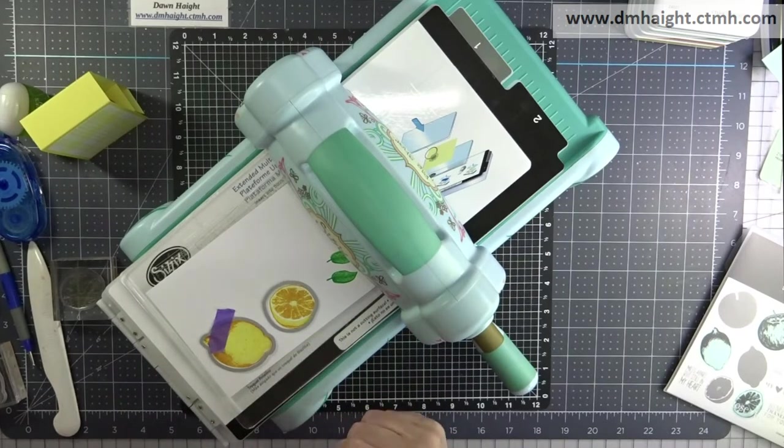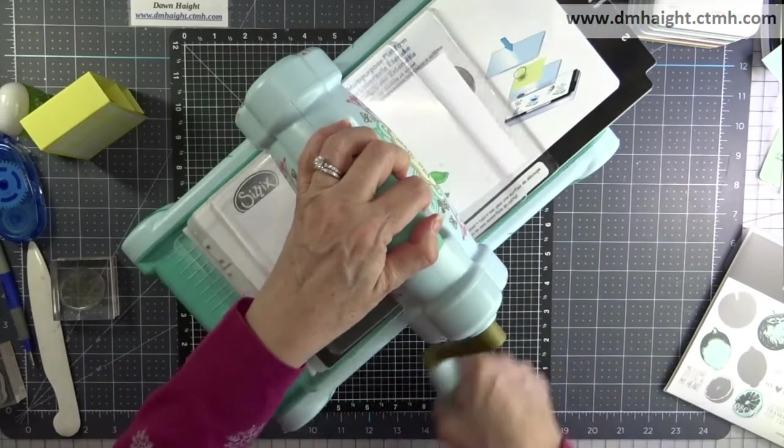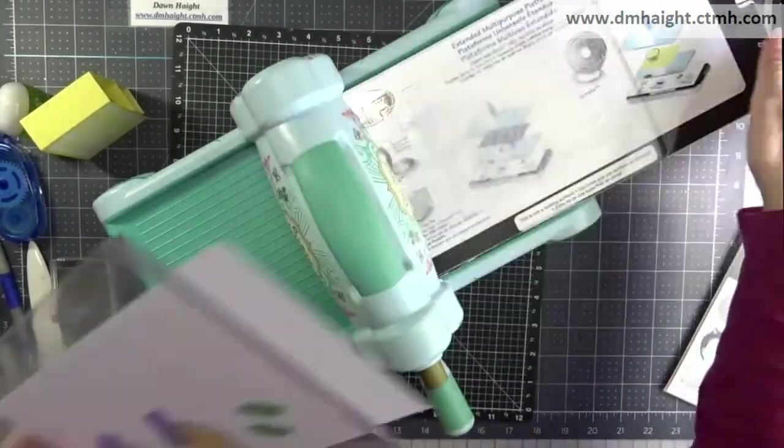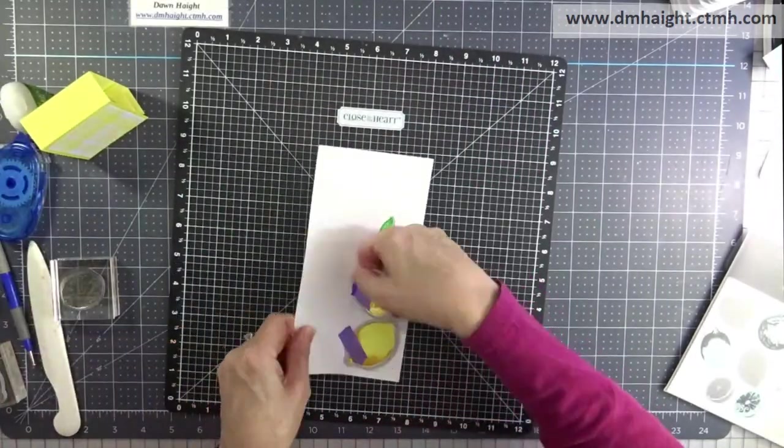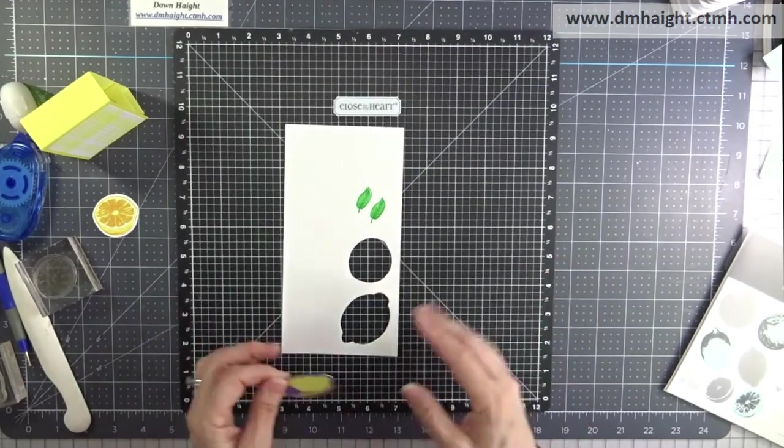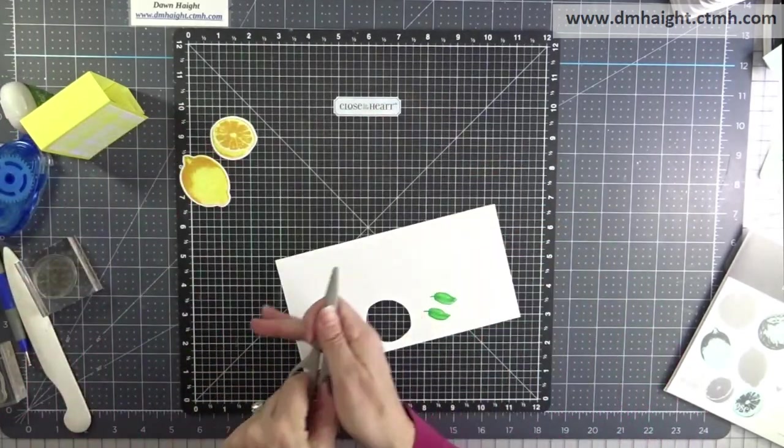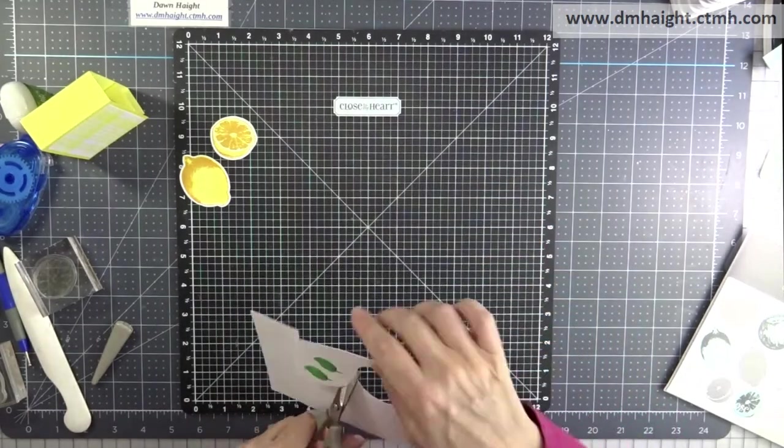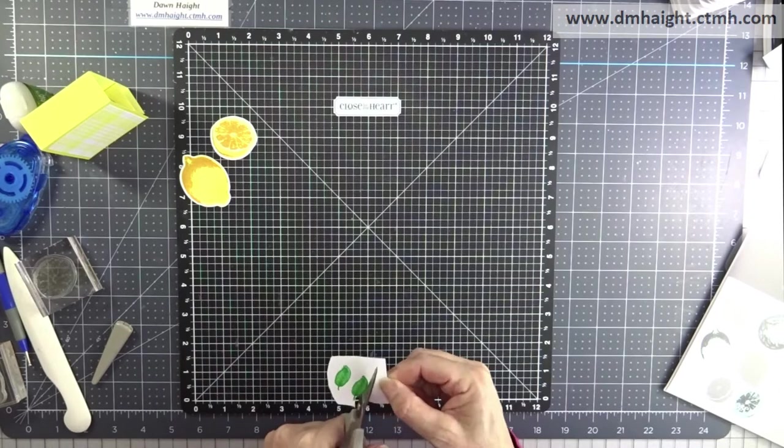First I'm going to run the lemons through using the coordinating dies. Then I'll fussy cut the leaves. I'll speed it up super fast. I wish I could fussy cut this fast.